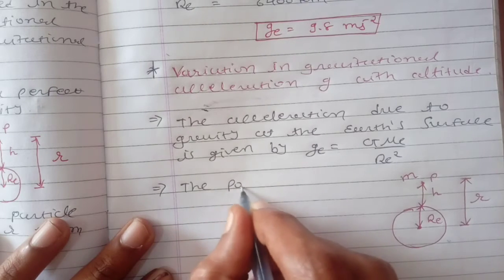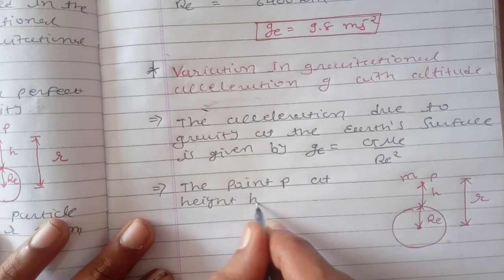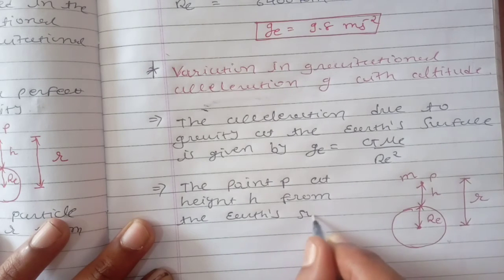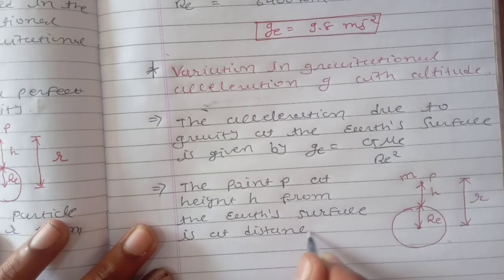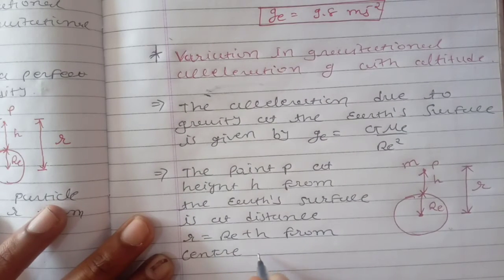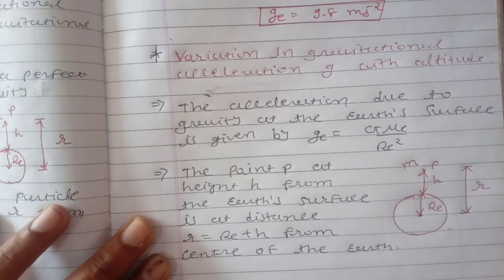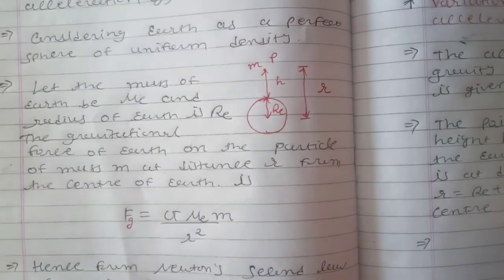Point mass at point P at a height h from the Earth's surface: the distance small r is equal to R_e plus h, measured from the center of Earth. Now, the force that Earth exerts on this small mass m — let us write the formula for that gravitational force.